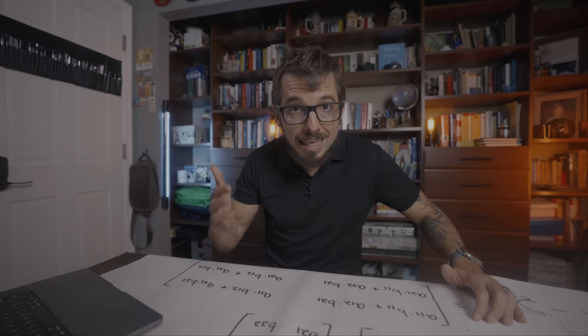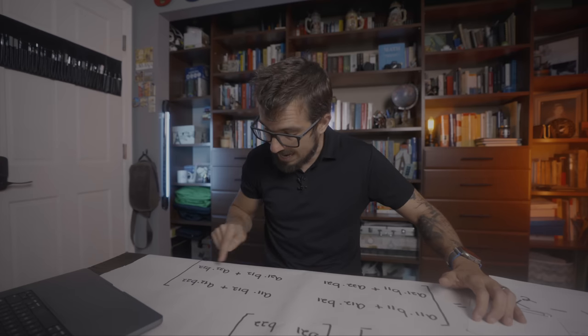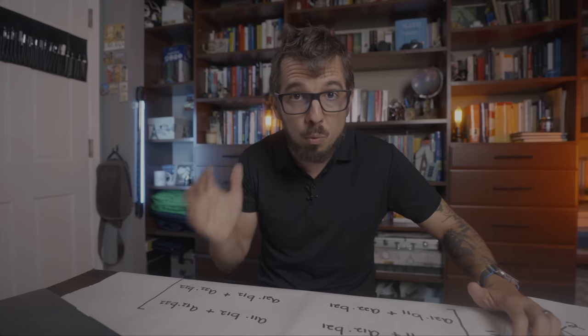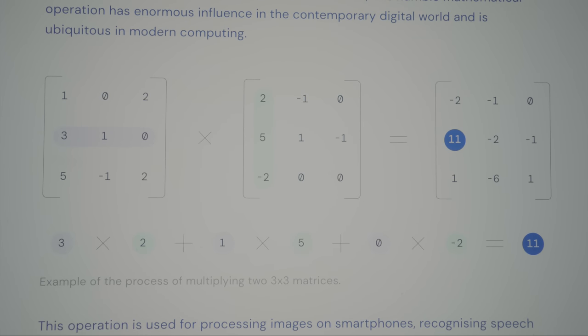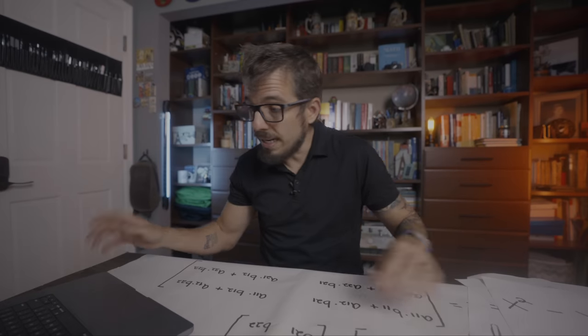Let's count how many multiplication operations we need in this example — one through eight. Eight multiplication operations whenever we multiply two 2x2 matrices. But what about 3x3 matrices? Notice how we come up with the value 11 here. We multiply this row by this column, and you can see that we need three multiplications just to compute one value out of nine. So we will need a total of 27 multiplication operations to multiply 3x3 matrices. In general, when we use the naive algorithm — the one we learned in school — the number of multiplication operations equals the size of the matrix to the power of three: eight for 2x2, 27 for 3x3, 64 for 4x4, and so on.